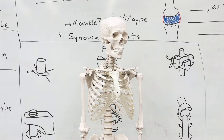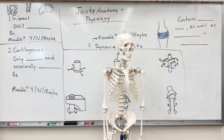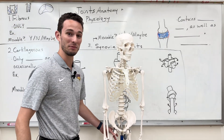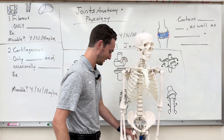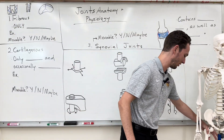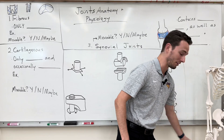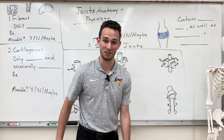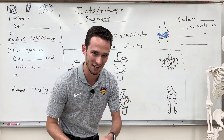Hey everybody, Mr. Jay here. So I'm using AI on my camera to actually see through me so you can only see my bones and my joints. So throughout the rest of this class, I'm just going to be a skeleton. If you believe me for even a second, I'm going to be laughing at you for the remainder of the time that you watch Organized Biology. So hey everybody, Mr. Jay here.